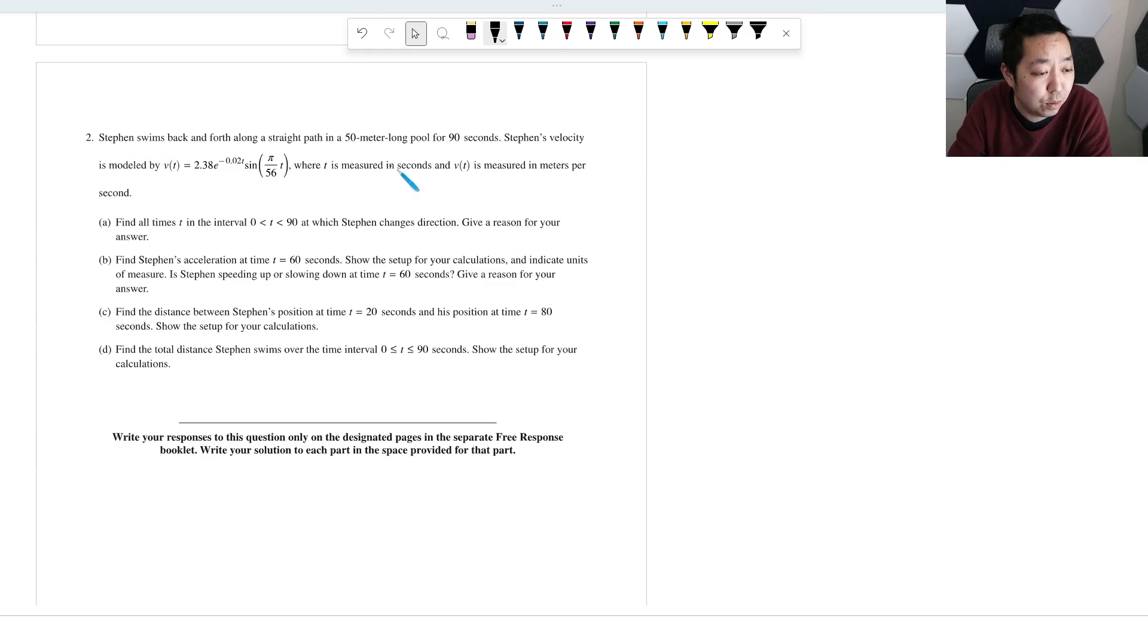So Stephen swims back and forth along a straight path of a 50-meter-long pool for 90 seconds. Stephen's velocity is modeled by this equation. Find all times where Stephen changes direction. Changing direction is where the velocity is going to change sign and give a reason for your answer. This is where the velocity changes, velocity goes from positive to negative.